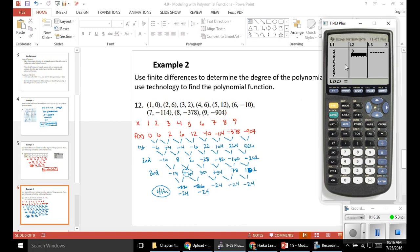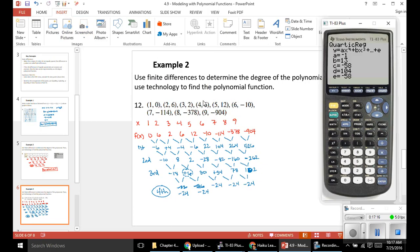The Y coordinates. We've got 0, 6, 2, 6, 12, -10, then -114, then -378, and finally -904. Back in the stat menu, we want to calculate. This is a fourth degree. So we want a quartic regression equation, option 7. And we hit enter. And there it gives us our coefficient.